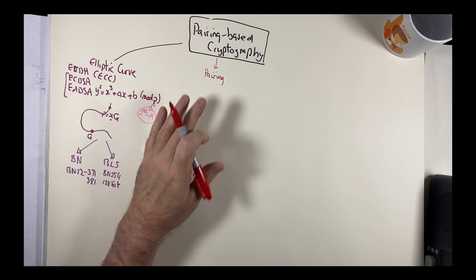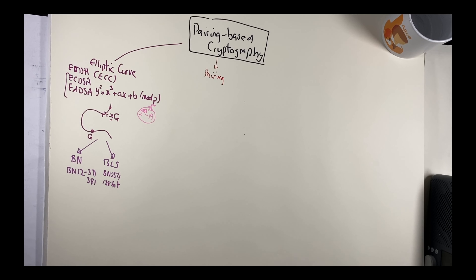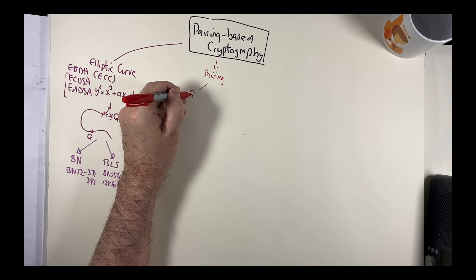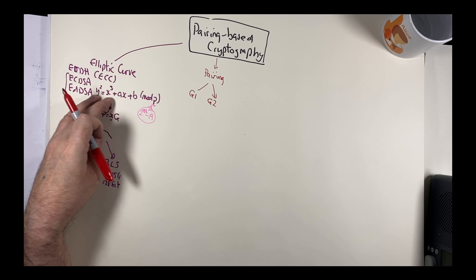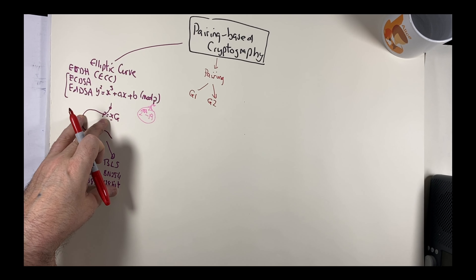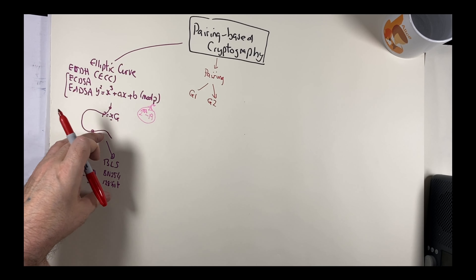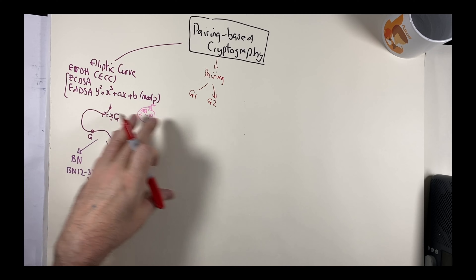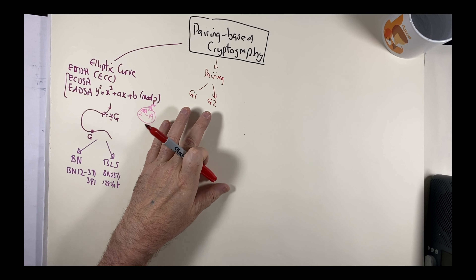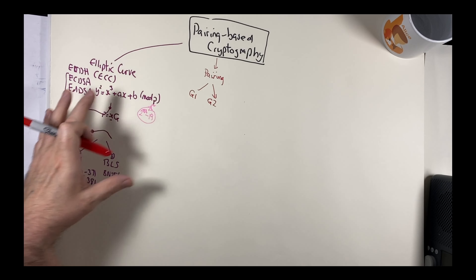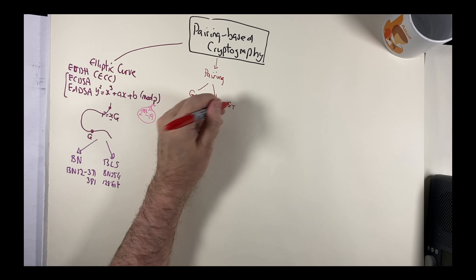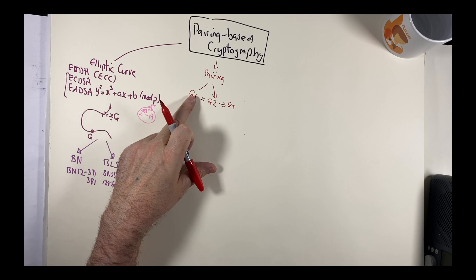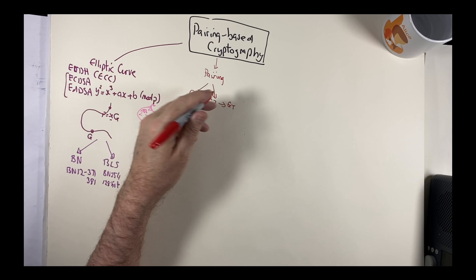With pairings, we create a bilinear map. We have two subgroups on the curve: G1 and G2. Think of them as different ways to represent points on the elliptic curve — one maps onto the G1 group and the other onto the G2 group. We then multiply these together to give a result in a third group, GT.